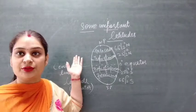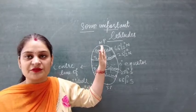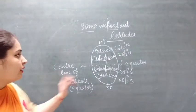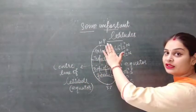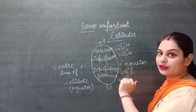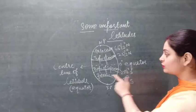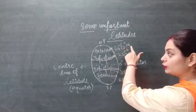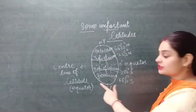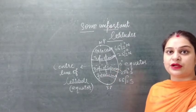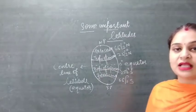There are some important latitudes. The equator divides the earth into two equal halves — the upper half is the northern hemisphere and the lower half is the southern hemisphere. In the northern hemisphere, 23 and a half degrees north is called the Tropic of Cancer, and in the southern hemisphere, 23 and a half degrees south is called the Tropic of Capricorn. Then 66 and a half degrees north in the northern hemisphere is the Arctic Circle, and 66 and a half degrees south in the southern hemisphere is the Antarctic Circle.